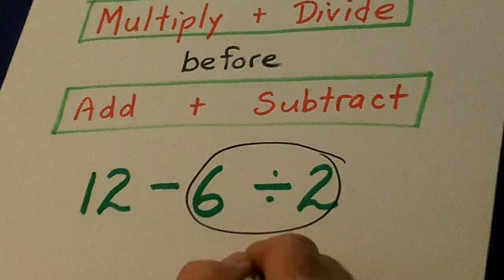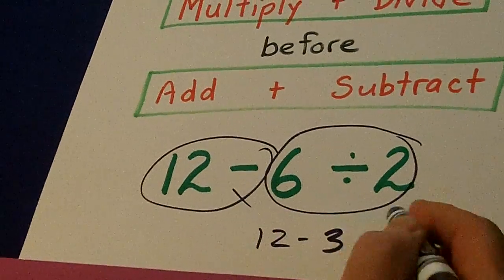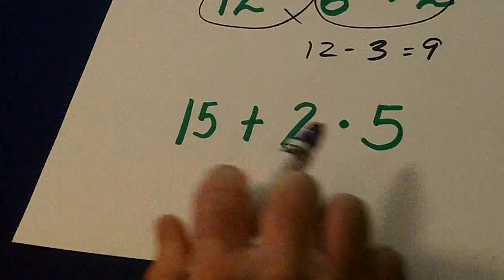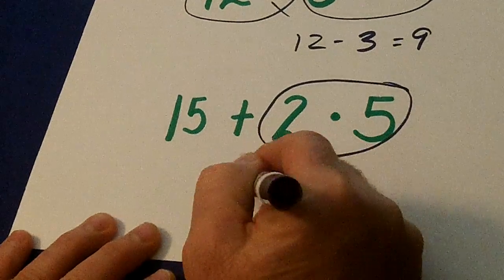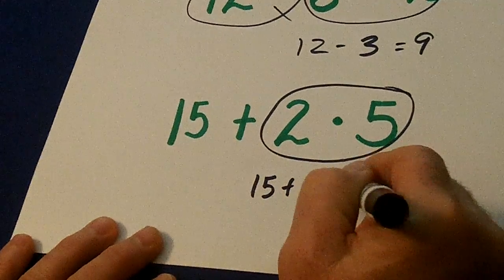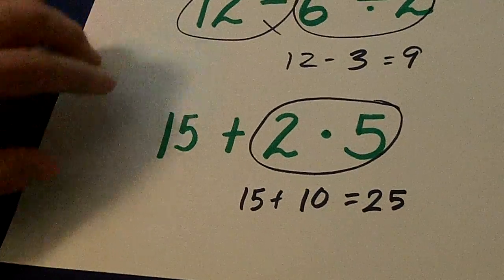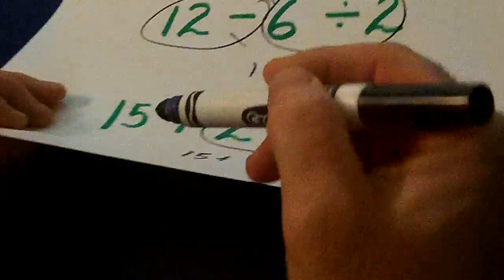So we divide and get 3. Then we bring this down. 12 minus 3 is 9. Let's look at this one. We're supposed to multiply first. 10. 15 plus 10 is 25. The correct order is division and multiplication before subtraction and addition.